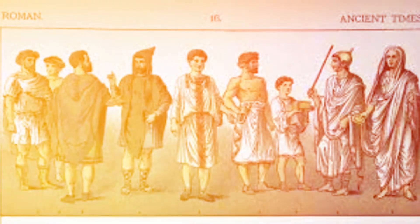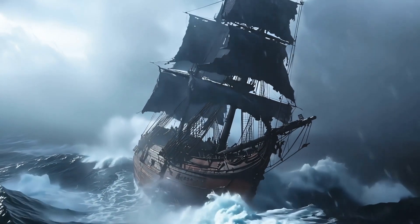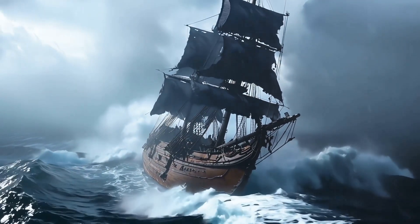The inscriptions also helped date the shipwreck. Since the names reflected Roman citizenship granted to Italian tribes after 89 BCE, the ship must have sailed after that year. But how did this mighty vessel end up on the bottom of the sea?